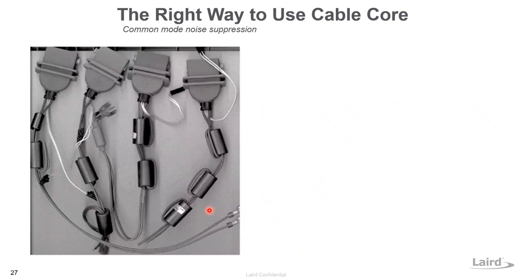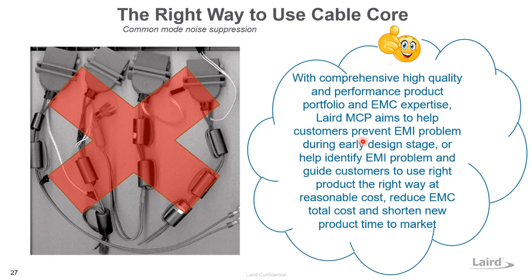This picture shows a very traditional way customers tackle EMI problems — stacking up ferrite cores on a cable harness, trying as many as possible during early testing until the EMC problem is solved. But that's not the right way for mass production. With Laird's EMC expertise, we can guide you to use the right solution — combining cores, choosing the right position and location with the right materials — to reduce the number of cores needed for mass production, reducing total EMC cost and troubleshooting time.